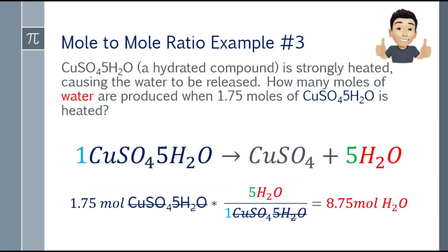The copper sulfate pentahydrate units cancel out. Multiplying 1.75 by 5 gives 8.75. So the answer is 8.75 moles of water produced when 1.75 moles of copper sulfate pentahydrate is heated.